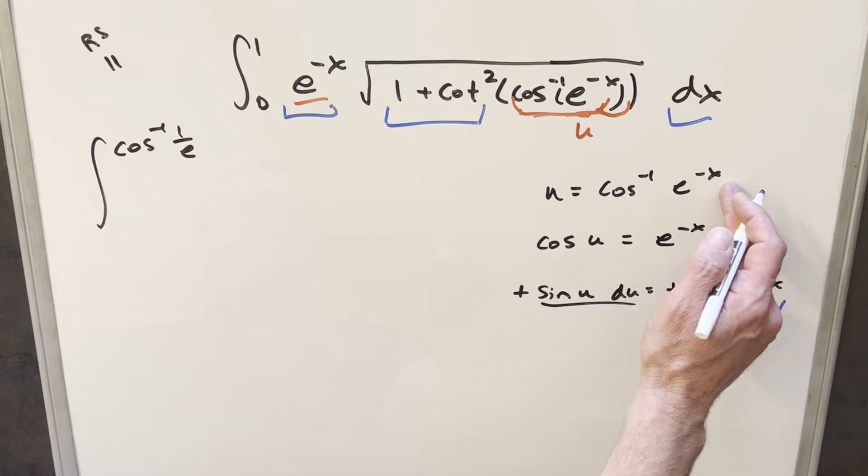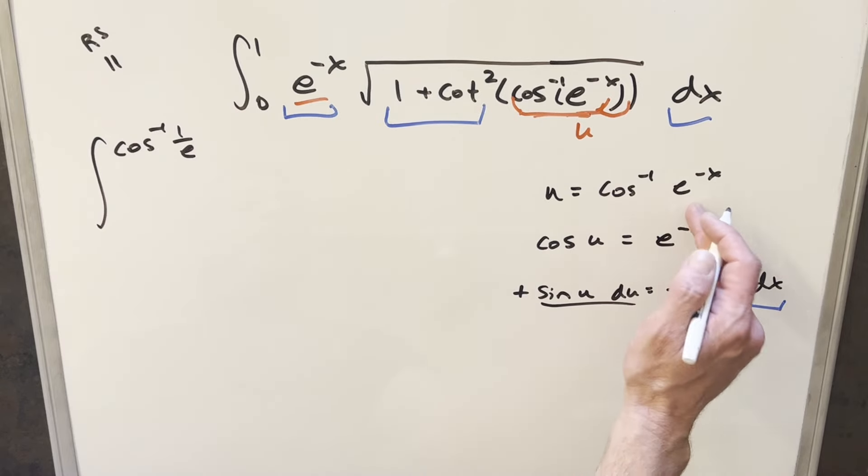Then plugging in zero here, e to the zero is one. So we're going to have arc cosine of one. That happens at zero.